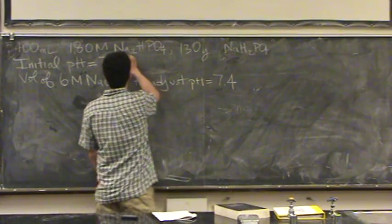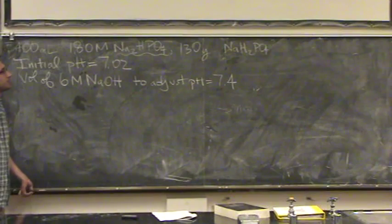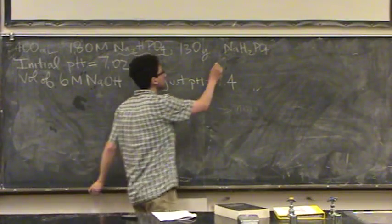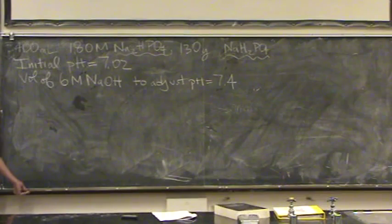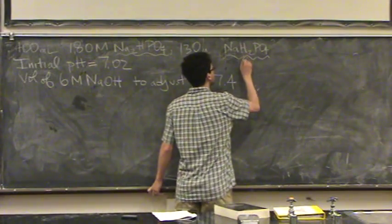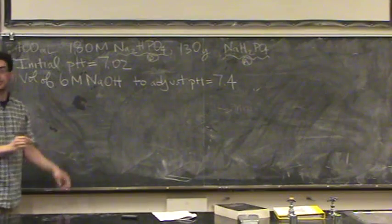Does anybody know, is this the acid or the base part of the buffer? And then we've got to think about this one too. I would think the one with more hydrogens is the acid part, does that make sense? We've got more hydrogens to give, acid is the proton donor. That one has two hydrogens, the first one has one.